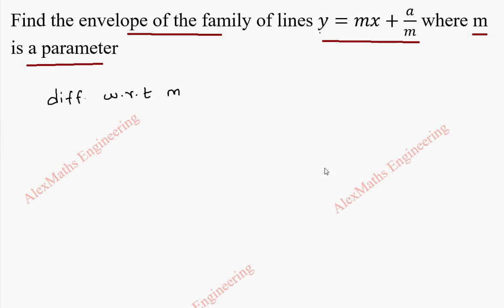The differentiation of y with respect to m will be 0, and differentiation of mx with respect to m: m differentiation is 1 and x will be written as it is. And here, a is a constant that will be written as it is. 1/m differentiation is -1/m².